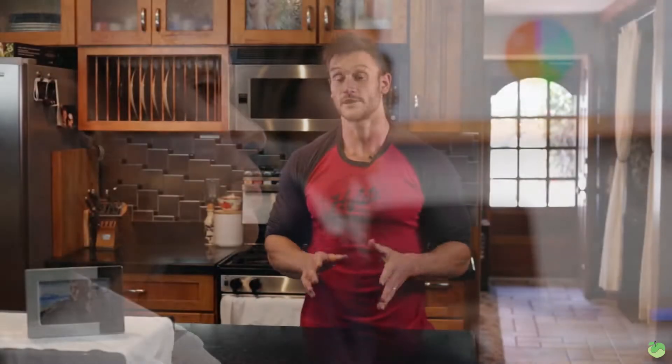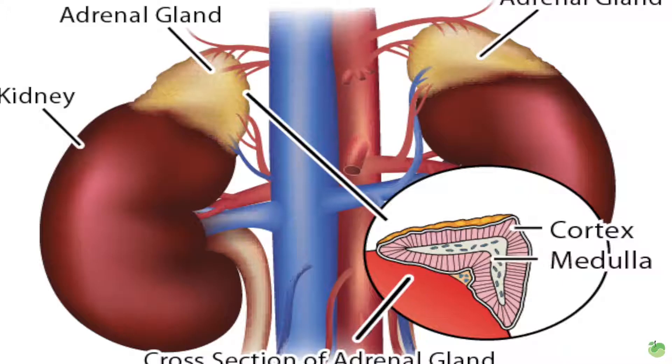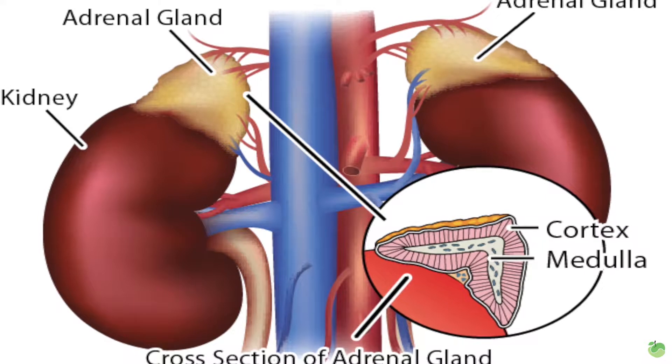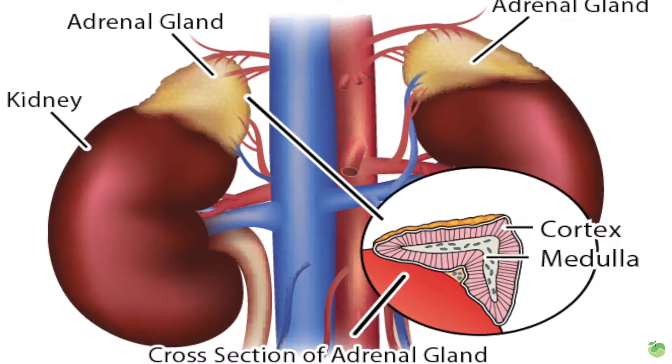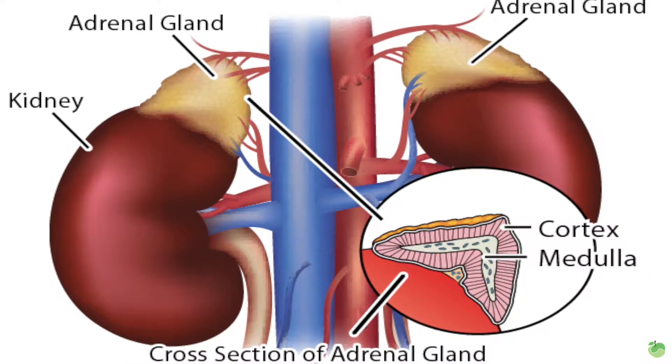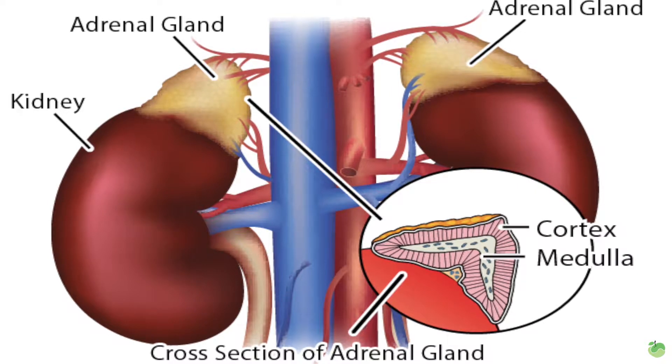Let me explain how the adrenals actually work and some of the structure of them. I'll explain the different hormones, the different catecholamines, and the different effects they have. The adrenals are basically a three and a half by one and a half inch gland that sits on top of your kidneys. They're mainly responsible for producing cortisol, norepinephrine, and DHEA. There are three different layers within the adrenals.